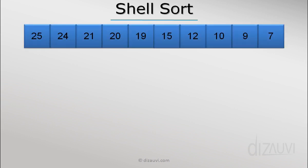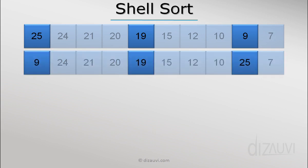For example, in this array we can just sort 25, 19, and 9. After we are done, the data in the array looks like this. Then we move to the next element.